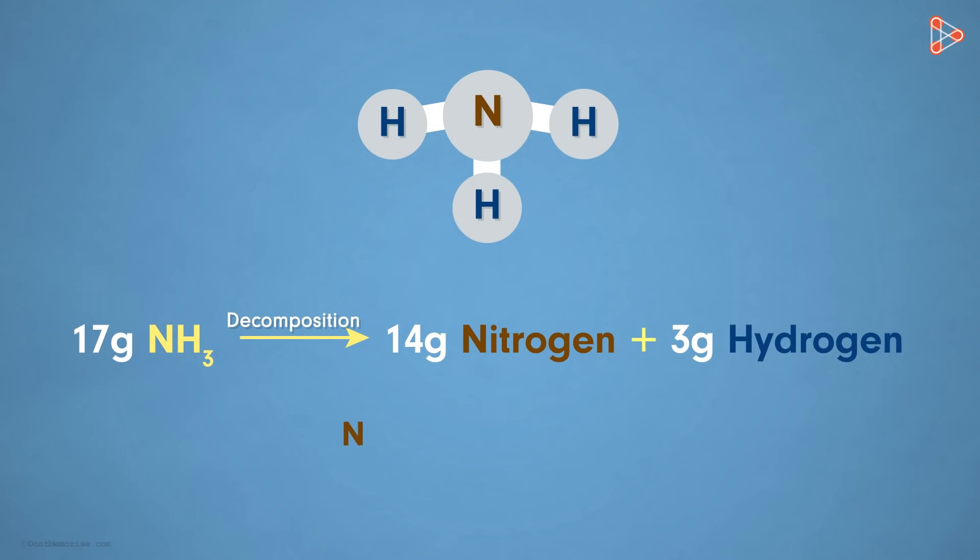So can we say nitrogen and hydrogen are present in ammonia in a constant ratio of 14 to 3? Even if we decompose ammonia in any other way, the ratio of nitrogen to hydrogen in the compound will always be the same. 14 to 3! Yes! And this is seen in all the compounds existing naturally or even artificially.